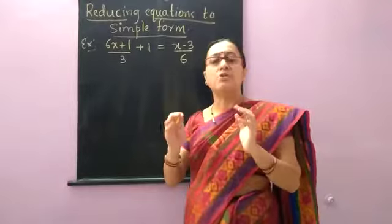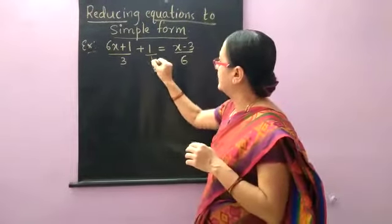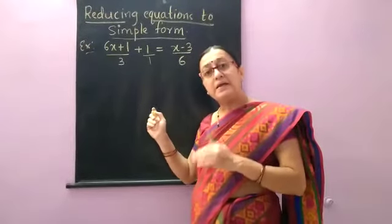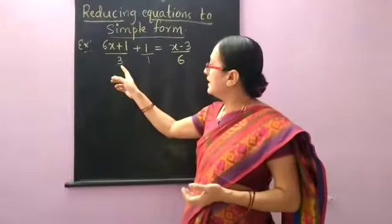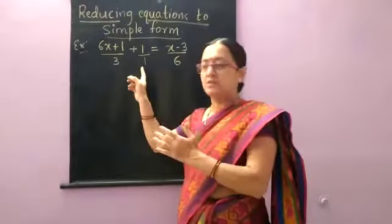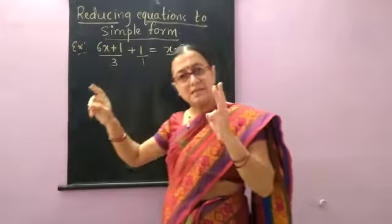Just like how we solve the fractions when denominators are different. Now this is 1 by 1. When denominators are different, how do we solve them? By taking the LCM. Here also we are taking LCM of 3 and 1. First let us take the LHS first. So 3 and 1. What is the LCM? LCM is 3.